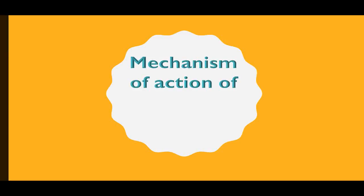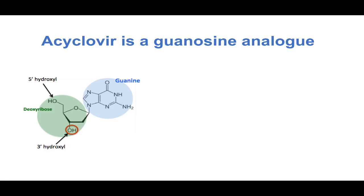Today we are going to discuss the mechanism of action of acyclovir. Acyclovir is a nucleoside analog, specifically an analog of guanosine. If you see the structure of guanosine, guanosine is guanine plus ribose.